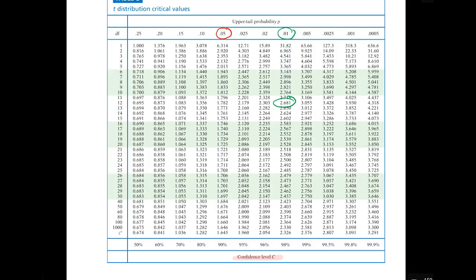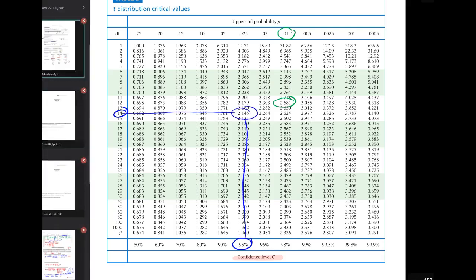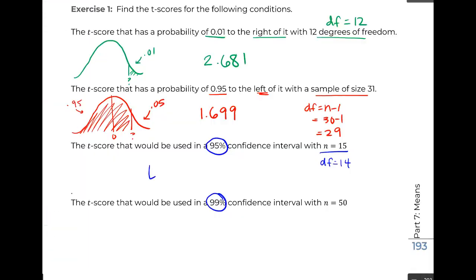So now we're looking DF of 14, 95% confidence. And again, just where those two things intersect. So 2.145.